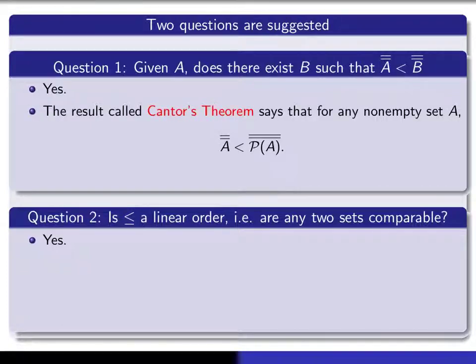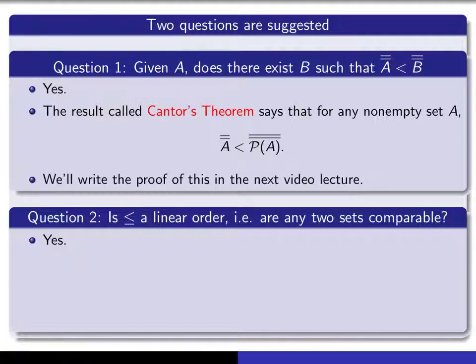The first one, this question here, is called Cantor's theorem, and in fact the answer for this B is to take the power set of A. Cantor's theorem asserts that given any non-empty set A, it's always the case that there's no way you can find a surjection from A onto its power set. So I'm going to turn to that question in the next lecture.